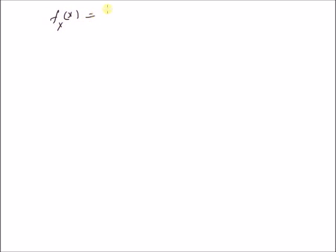Hello, welcome. In this short video, let us derive the mean and variance of Weibull distribution. The PDF of Weibull distribution is given by f(x) = alpha * beta * x^(beta - 1) * e^(-alpha * x^beta), where x is greater than 0. This is the definition of the Weibull PDF.